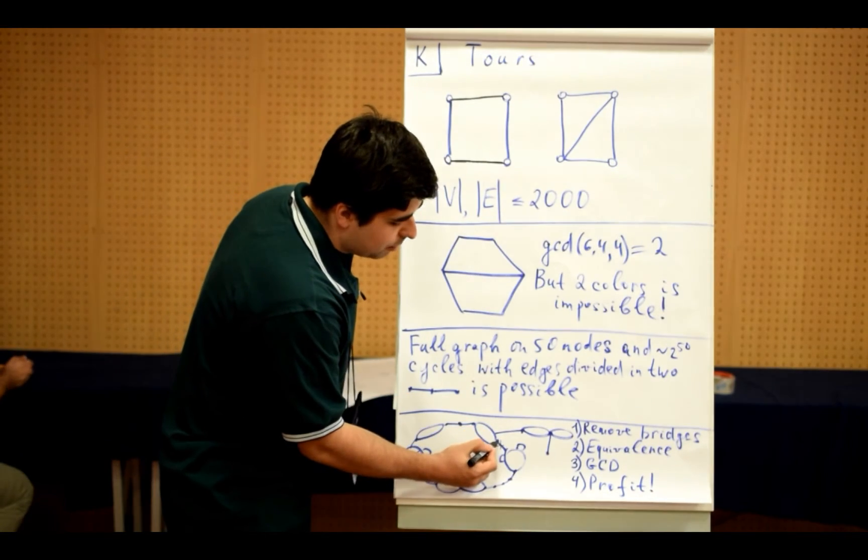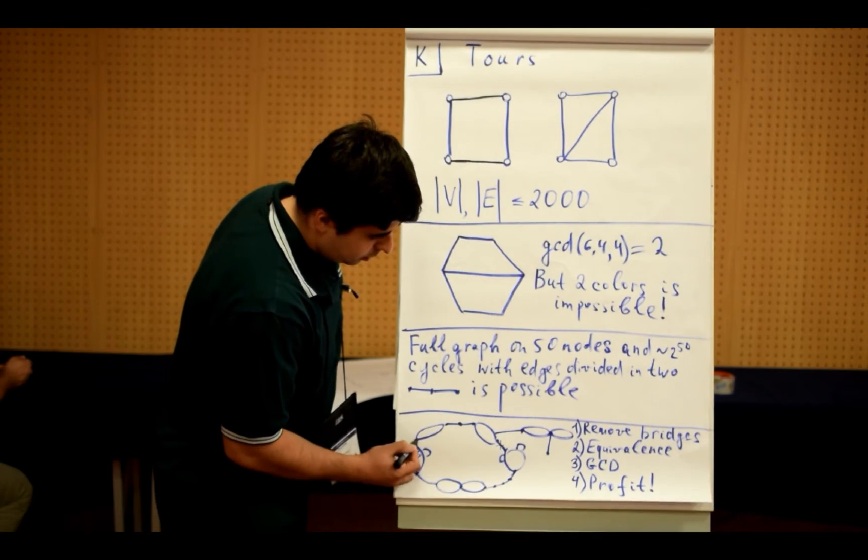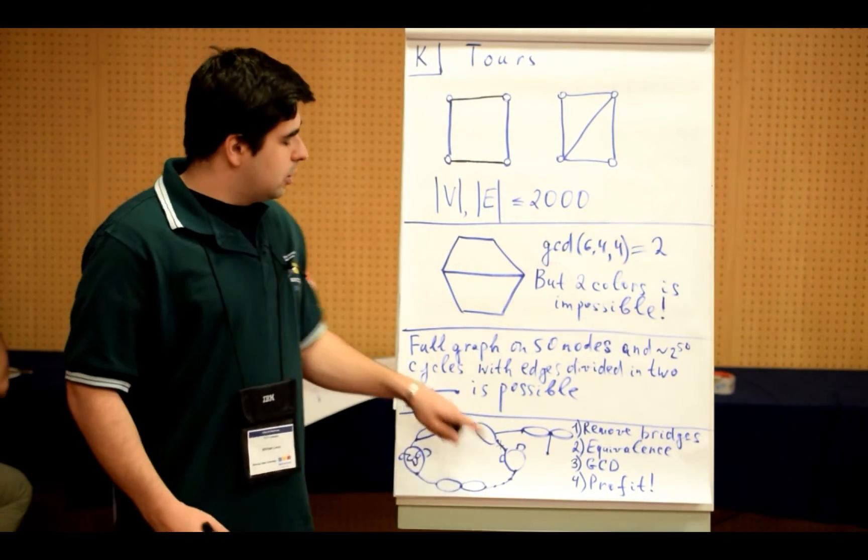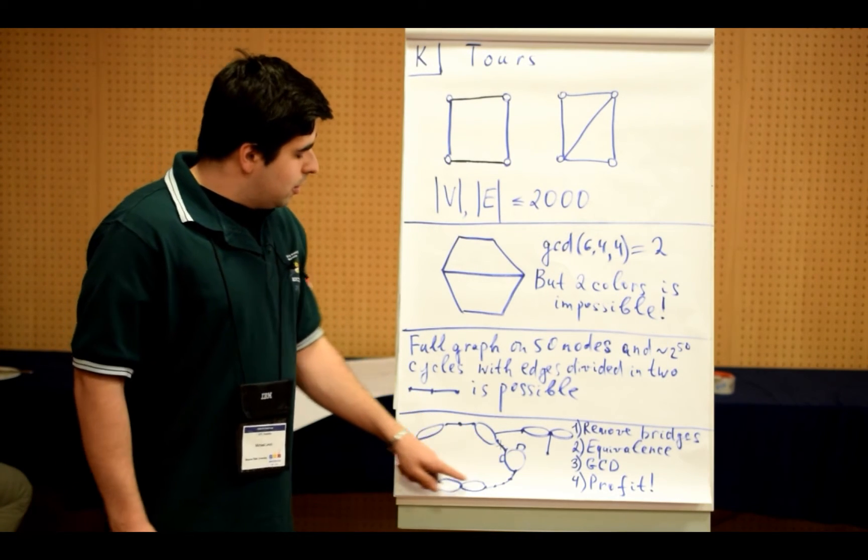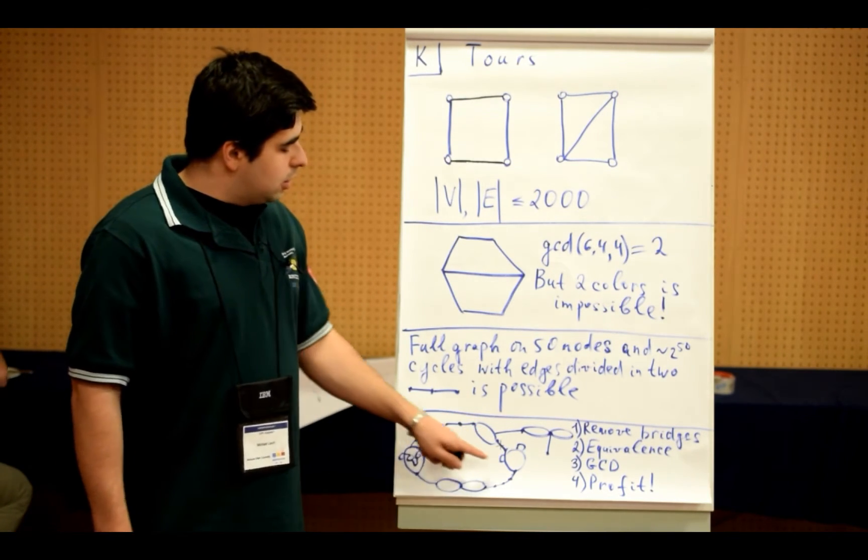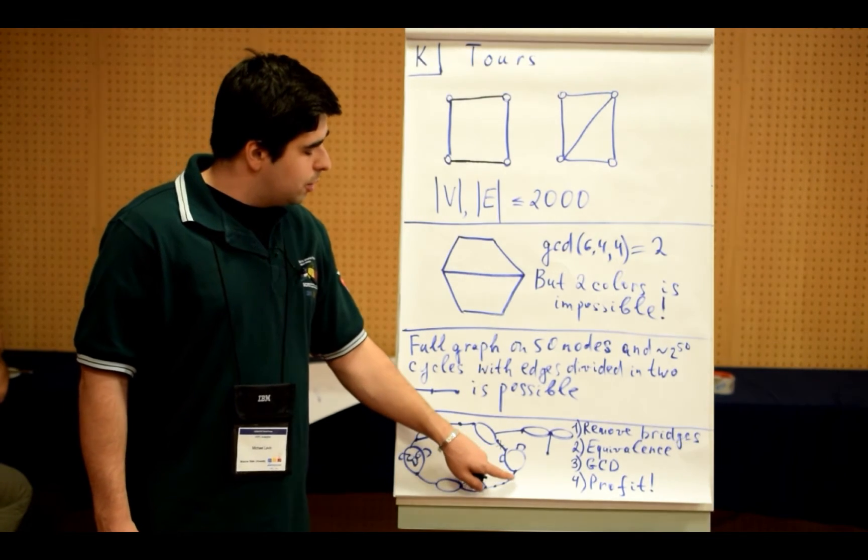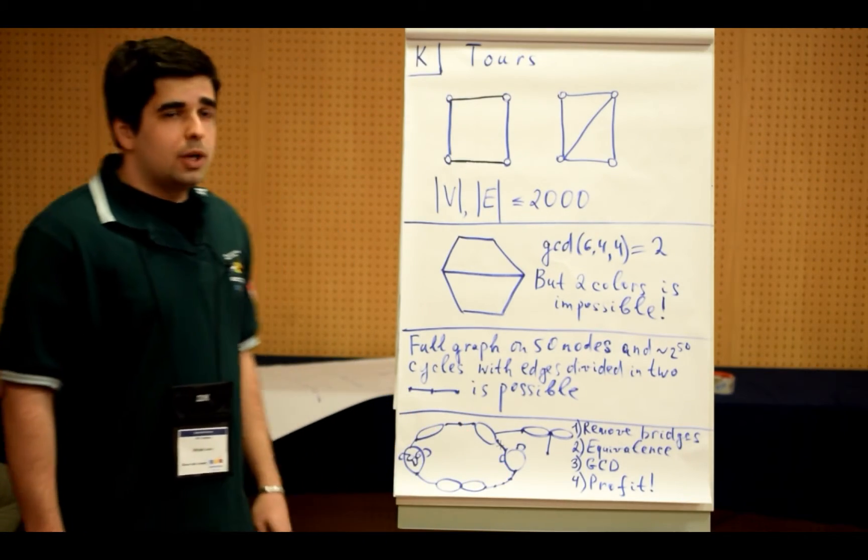And on this example, this edge, these four, this one, this one, and these two are edges which are in the same class of equivalence. And so always the number of edges with each color in this class of equivalence should be the same.